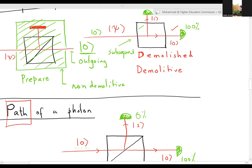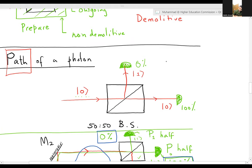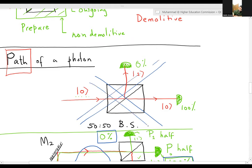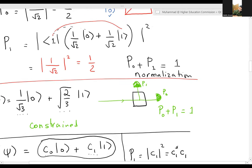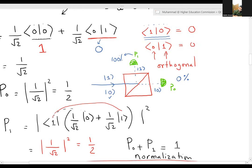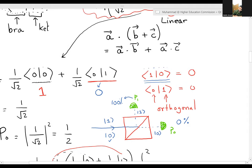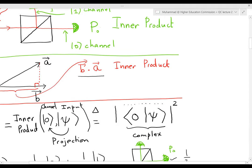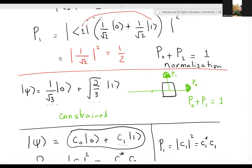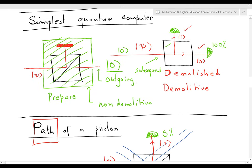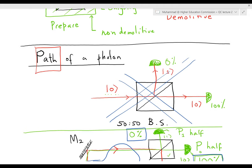Anas asks: how does the phase shifter alter the phase of state ket-1 but not state ket-0? Physically, a real phase shifter applies phase φ1 to ket-0 giving e^(iφ1)|0⟩, and phase φ2 to ket-1 giving e^(iφ2)|1⟩. For the superposition, this gives e^(iφ1)[(1/√2)|0⟩ + e^(i(φ2−φ1))|1⟩]. The overall factor e^(iφ1) is a global phase, which is inconsequential — it disappears when you take the modulus square to get probabilities. So only the relative phase φ2−φ1 matters, which I call φ.